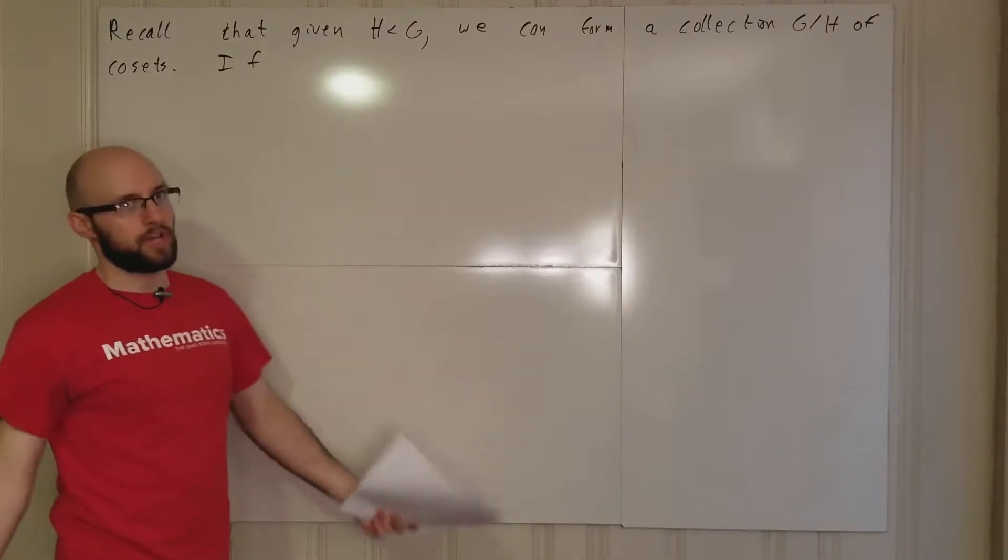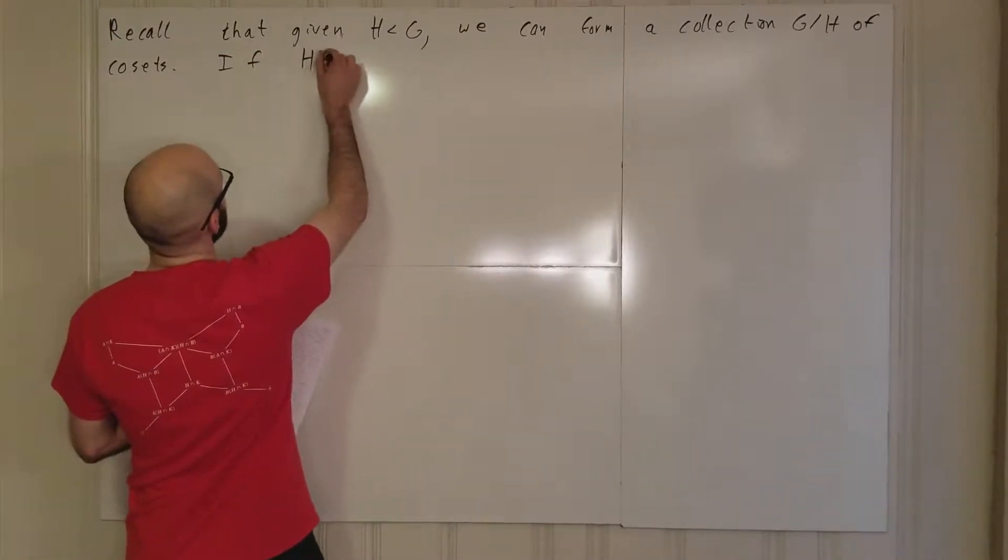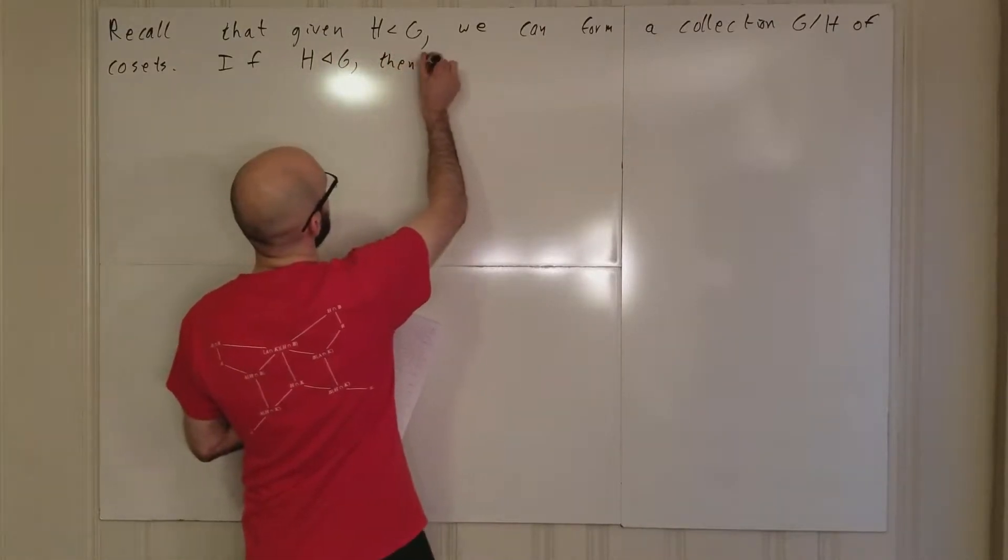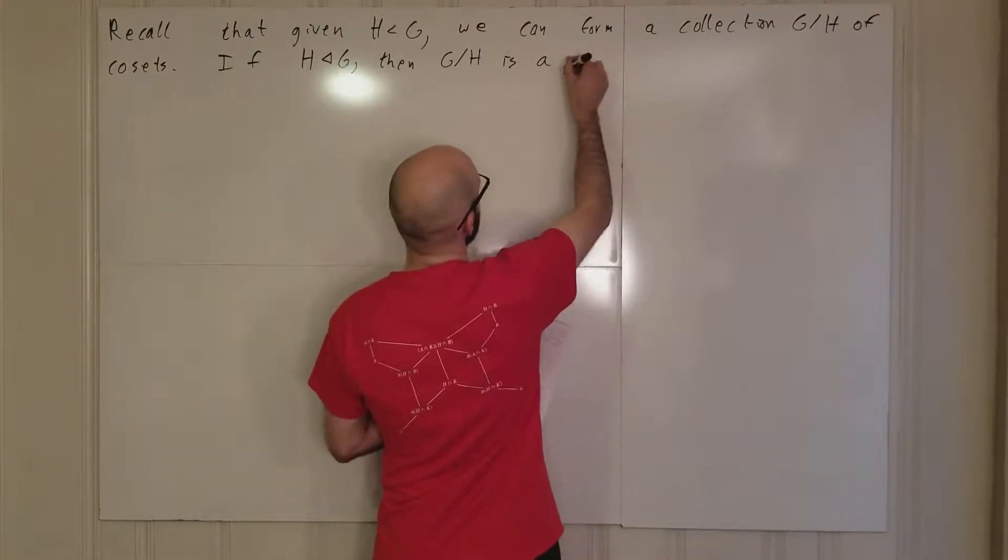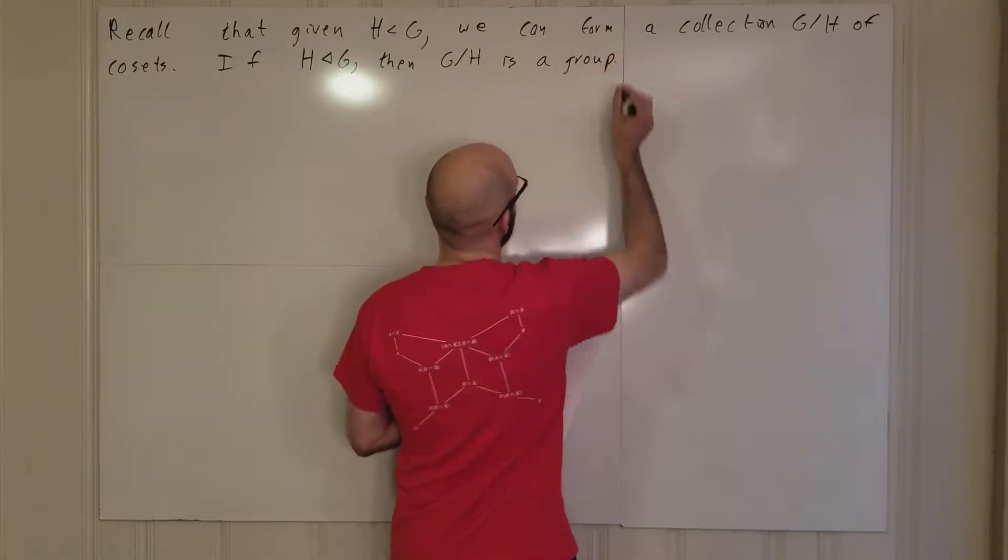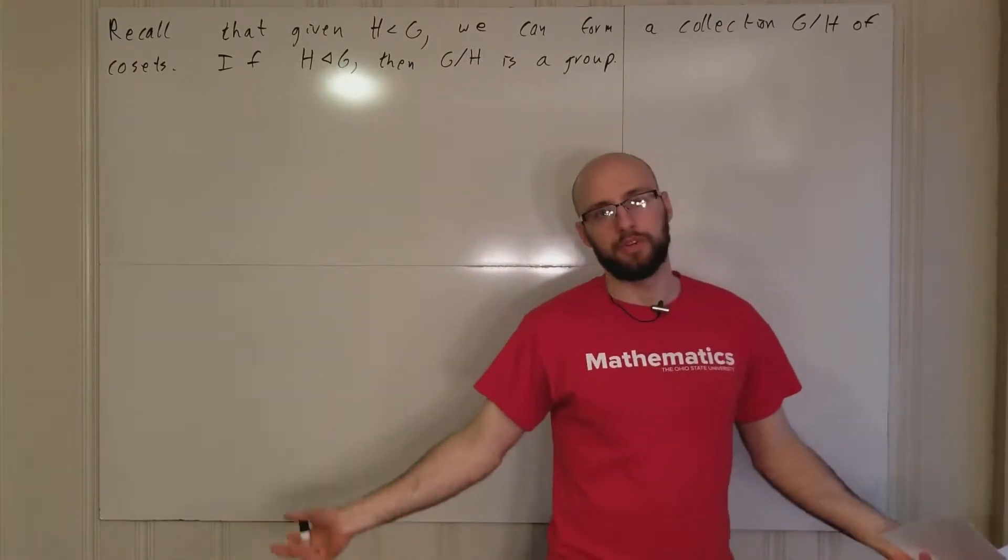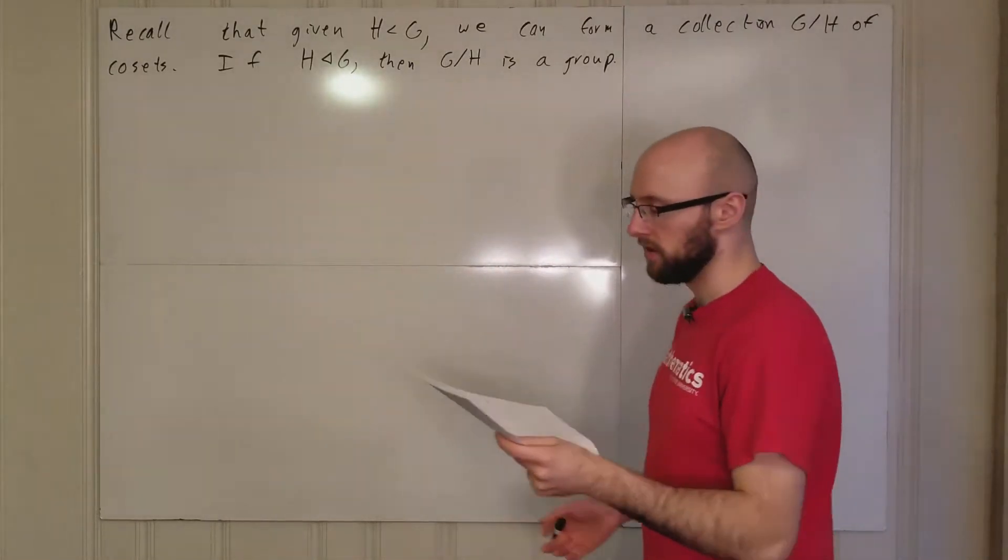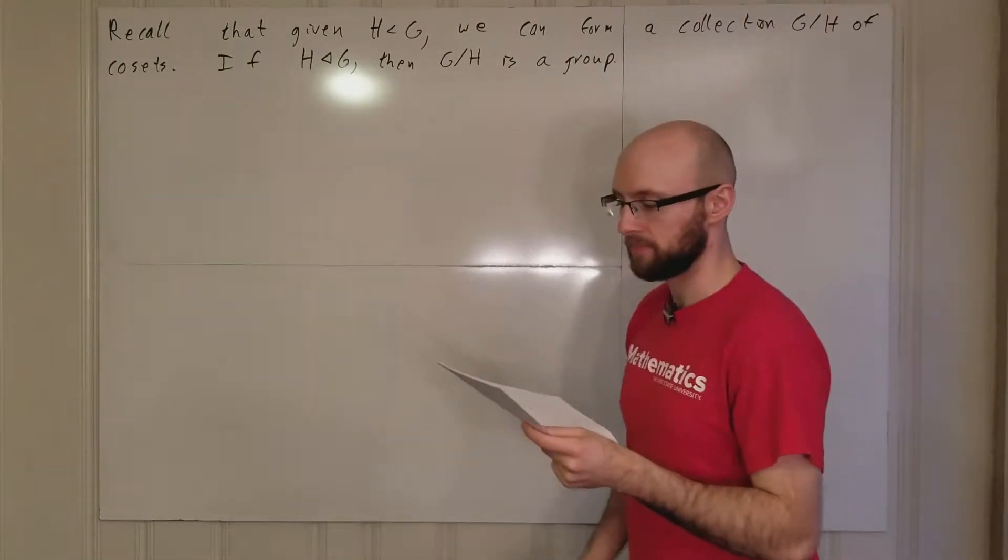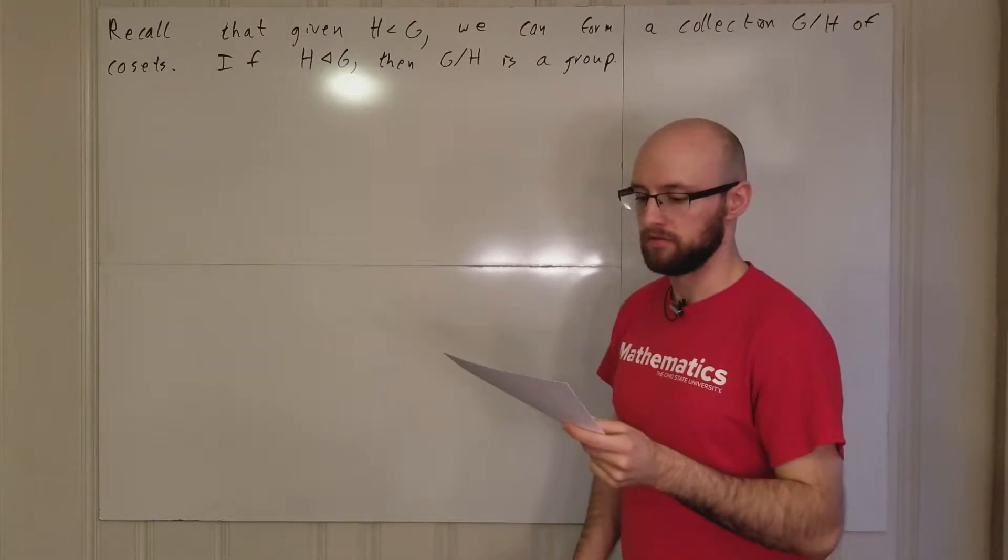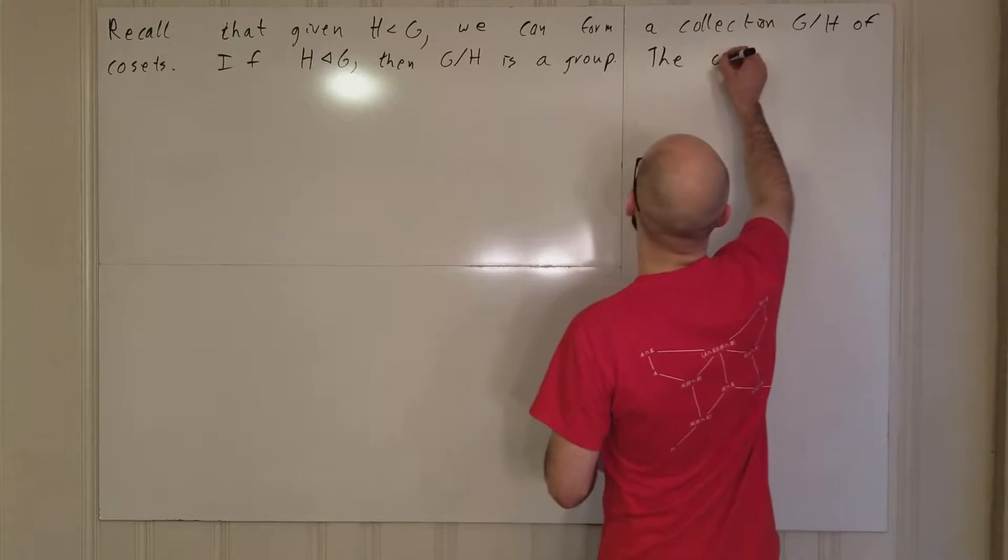If H happens to be normal in G, then we have a group. If H is normal in G, then G/H is a group. You take the coset g1H times g2H, which is equal to g1g2H. That's your group composition law.